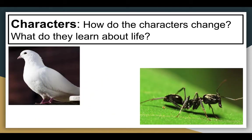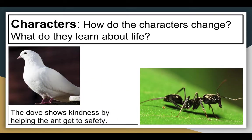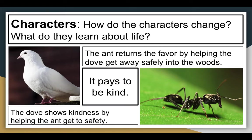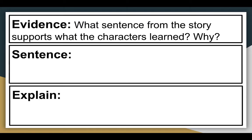What do the characters learn because of these problems? How do they change, or what do they learn about life after surviving these issues? We have our ant and our dove. The dove first shows kindness by helping the ant get to safety, and the ant returns that favor by helping the dove get safely into the woods. So the theme we can begin to see is that it really pays to be kind — kindness pays off and does not go wasted. Taking that theme in mind, we're going to look for evidence from the story to support it, and then we need to explain why.